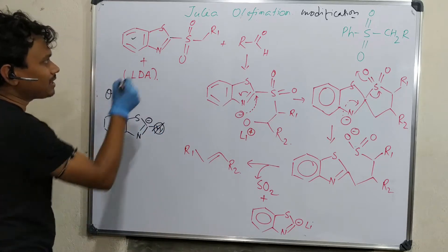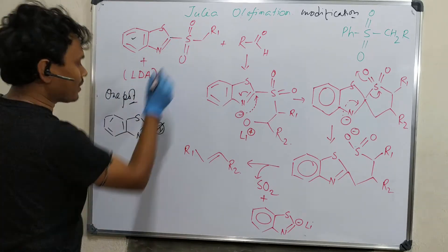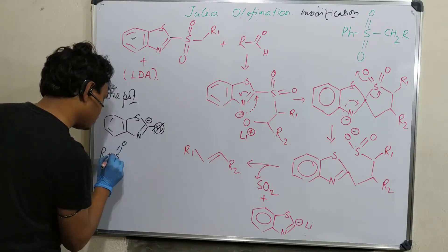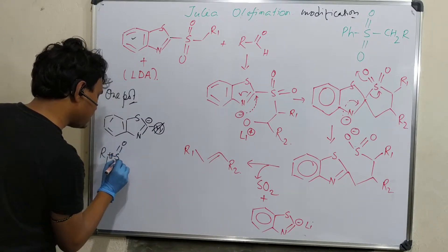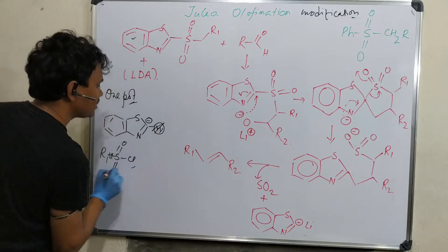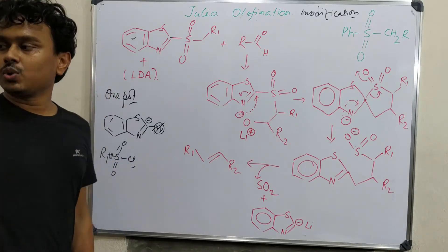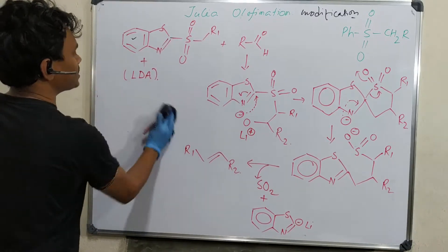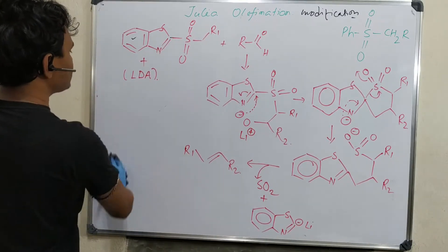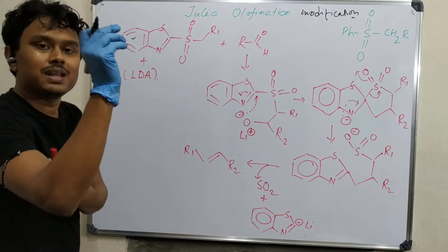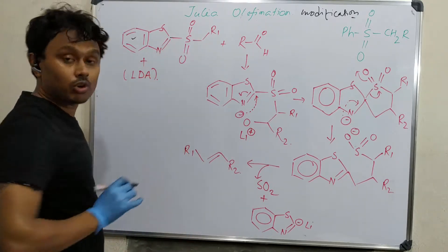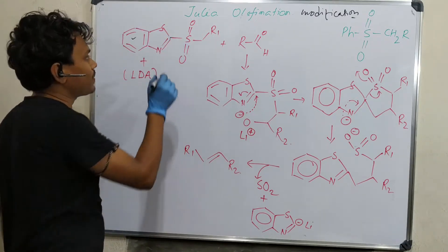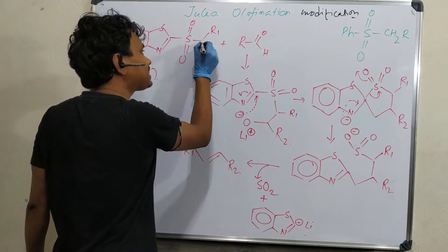This produces carbanion here which will react with R1-CH2-SO2Cl. This is a one-pot reaction. In presence of LDA, which is bulky base but non-nucleophilic, nucleophilic attack on this center is not possible. It will selectively abstract this position hydrogen to produce carbanion here, and this carbanion will attack here to produce beta alkoxy salt.